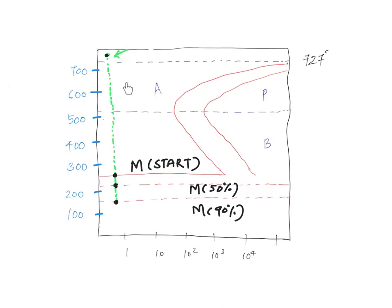If you suddenly cool it to here and then hold it for a while, you will get pearlite. If you suddenly cool it to here and hold your material at that particular temperature for a while, you will end up with bainite. So all these things we have already discussed.